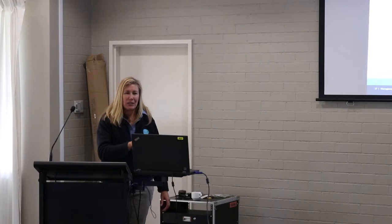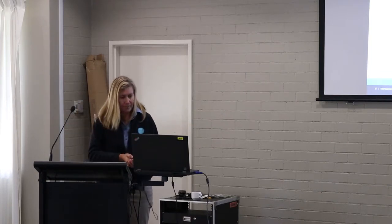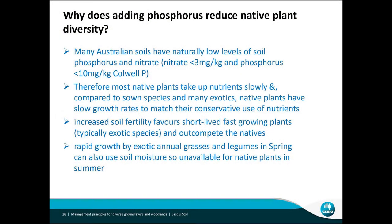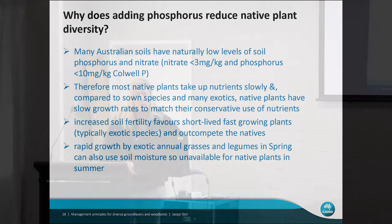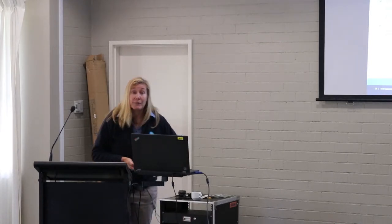It's always a balancing act in a pasture not to end up with too many annuals — that's been the whole focus of these talks, how you avoid annual pastures and maintain that perenniality. Most Australian soils had naturally low levels of phosphorus and nitrates. Most native plants take these nutrients up slowly and have slow growth rates to match that conservative use of nutrients. Increasing soil fertility favours those short-lived, fast-growing plants — typically the exotic species — which outcompete the natives.